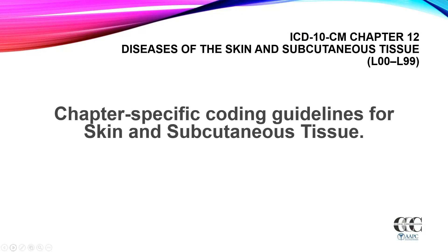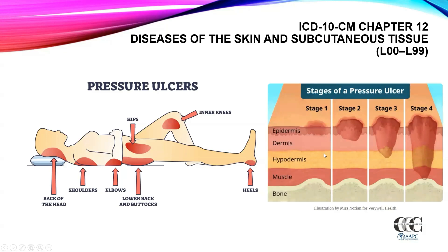Let's jump into some chapter-specific coding guidelines for skin and subcutaneous tissue. Before we look at the specific chapter coding guidelines, we need to understand some information about ulcers. We have a picture of pressure ulcers showing common areas where they develop: the back of the head, shoulders, elbows, low back and buttocks, hips, inner knees, and heels. These are significant pressure points when we are bedridden, thus the name pressure ulcers.